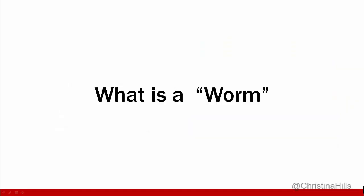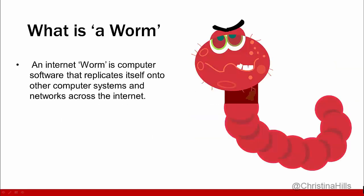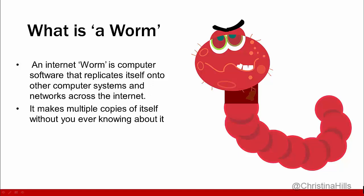What is a worm? An internet worm is computer software that replicates itself onto other computer systems and networks across the internet. It makes multiple copies of itself without you ever knowing about it, and then those copies make other copies. Typically worms are malicious, and you definitely don't want to have a worm.